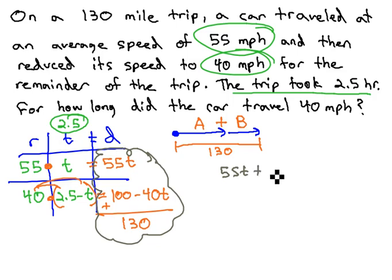55T, the first leg, plus 100 minus 40T, the second leg, equals the entire trip of 130 miles.